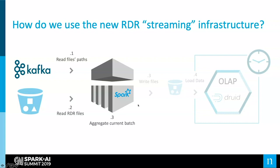If we use the same example from throughout the presentation, you can see that we replaced what we had before — Kafka with the file names and the files themselves on our data lake. We have Spark batch applications running every few hours, aggregating what we call the current batch, and then writing the result of the aggregation to S3 buckets, and loading them into our OLAP database, which is Druid.